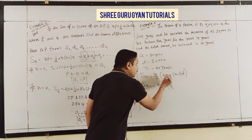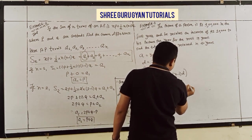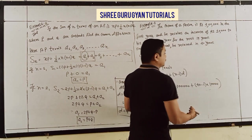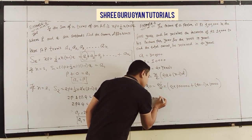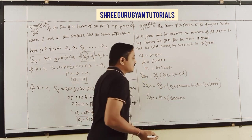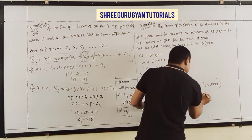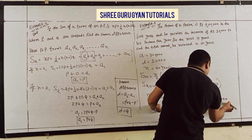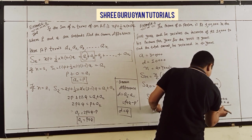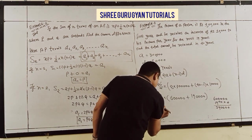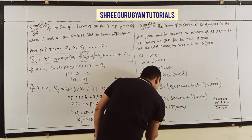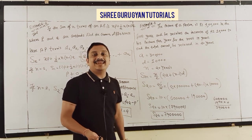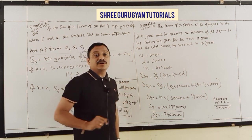S20 = 20/2 × (2 × 3,00,000 + 19 × 10,000) = 10 × (6,00,000 + 1,90,000) = 10 × 7,90,000 = 79,00,000. Total received in 20 years is 79 lakhs.